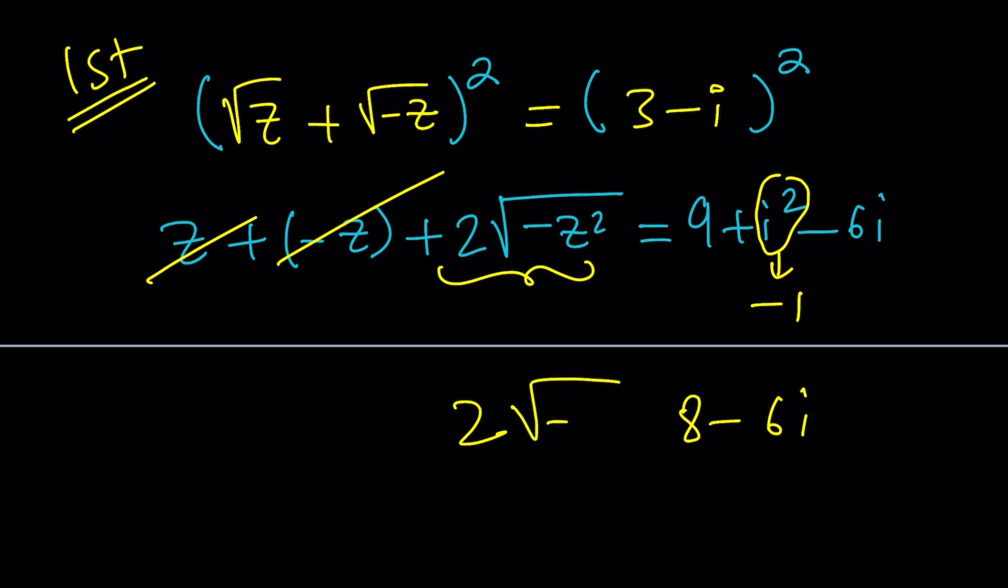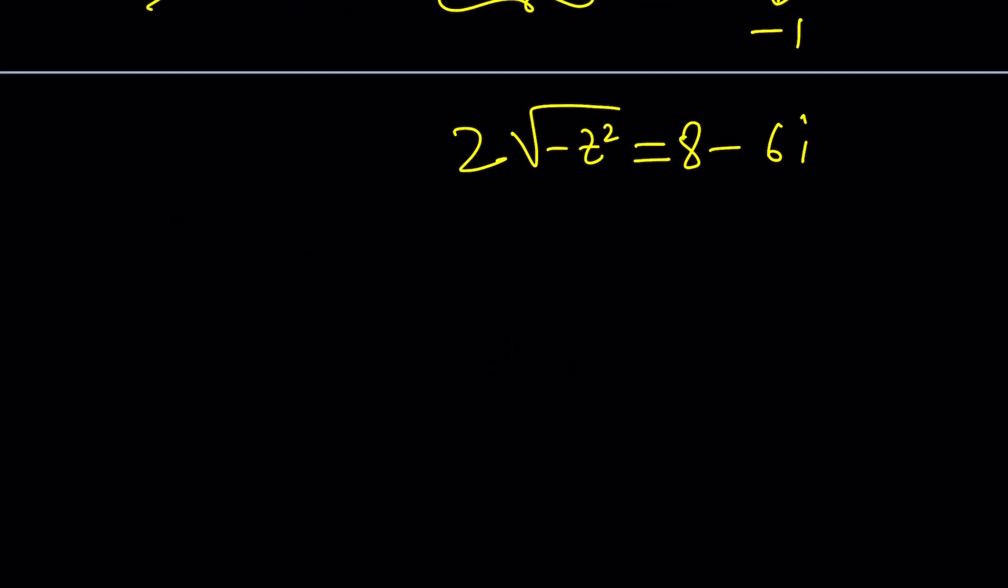2 times the square root of negative z squared equals 8 minus 6i. I could simplify this, but I'm not going to because that's saved for another method. I will divide both sides by 2, and then we're going to square both sides one more time because we're dealing with a radical.